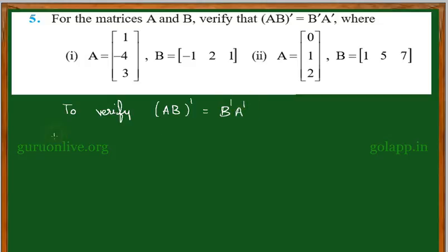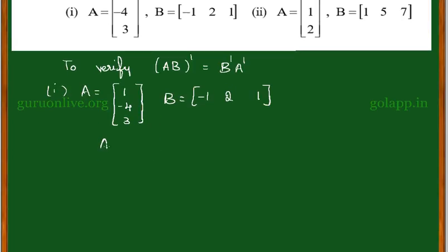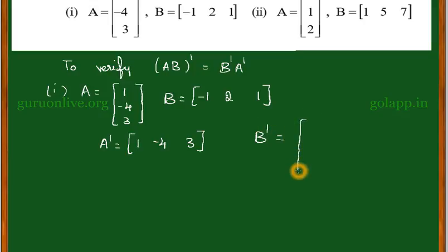Consider one by one. The first sub-question is A equal to [1, -4, 3] and B is equal to [-1, 2, 1]. From this, A transpose is obtained by changing the column into a row, which gives [1, -4, 3]. Similarly, B transpose is obtained by changing rows into columns, giving [-1, 2, 1].